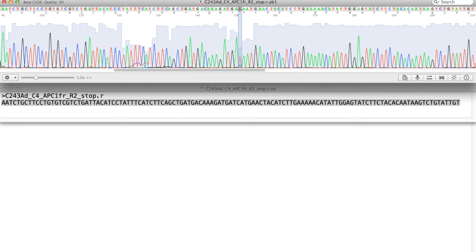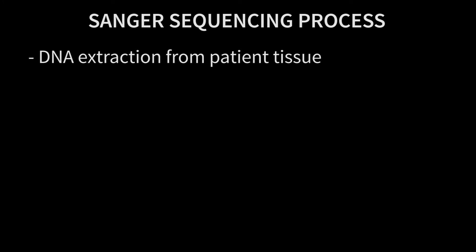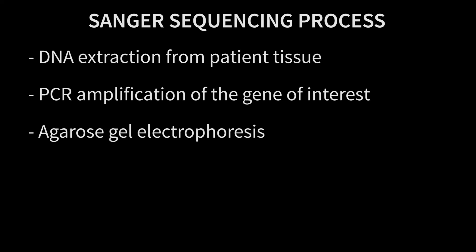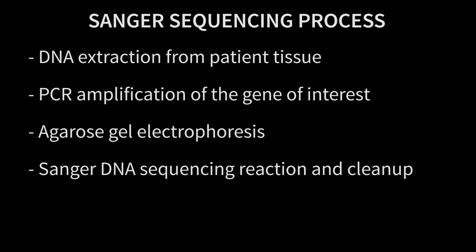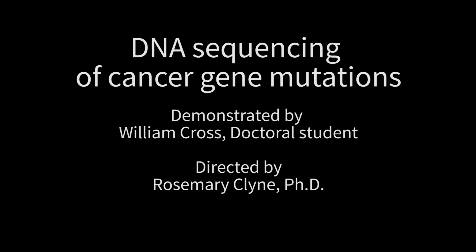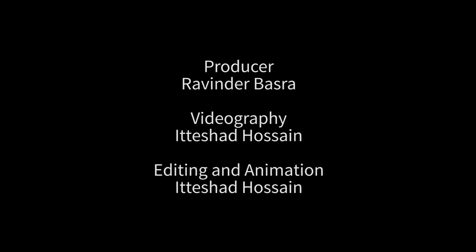Sanger sequencing can be used to detect mutations in other genes that collectively can help us understand the causes of cancer. To summarise what we did today: we began with a DNA extraction from patient-derived tissue, then performed a PCR amplification of the APC gene, then checked this PCR using agarose gel electrophoresis, then performed our sequencing reaction and cleanup, and finally performed analysis of our sequencing results. Today we've performed Sanger sequencing, which is a really key technique in DNA experimentation. Thank you.